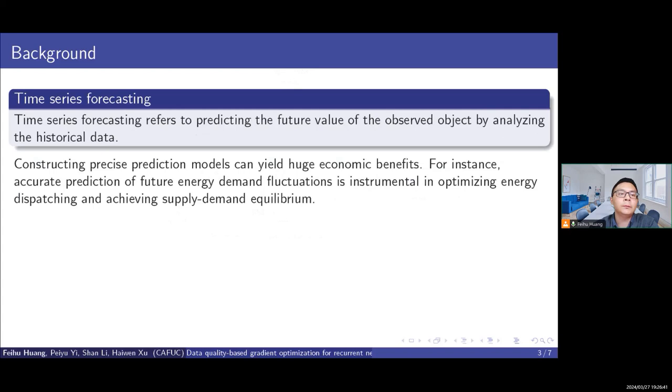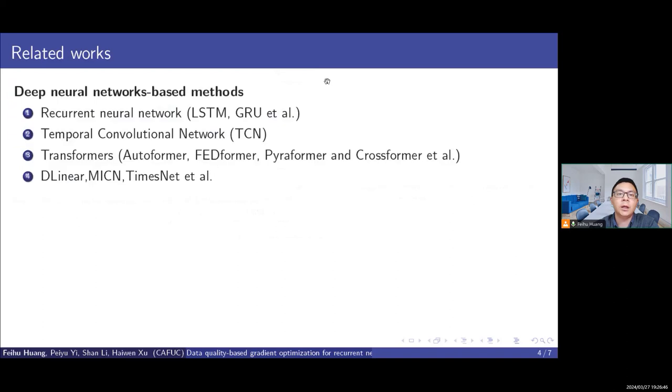Constructing precise prediction models can yield huge economic benefits. The popular approach for time-series forecasting is a deep neural network-based method, including the recurrent neural network, the temporal convolutional network, and the transformers.